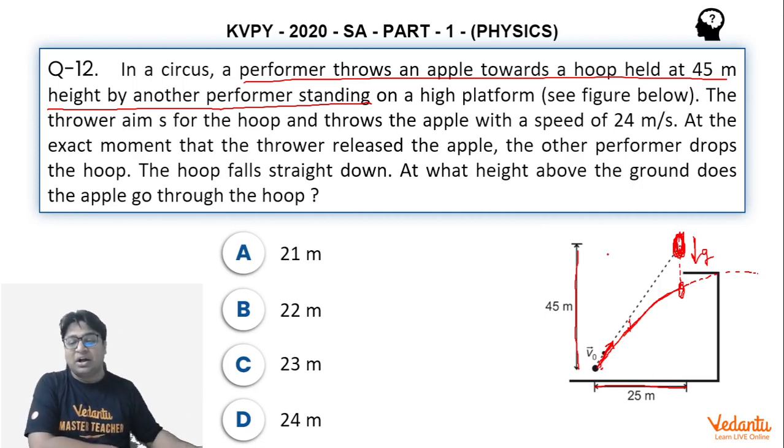Their relative acceleration becomes zero, which means that their relative velocity becomes constant. So in the frame of the hoop, if the ball was thrown with a certain velocity towards itself, then because the relative velocity is constant, the path of the bullet will appear to be a straight line when seen from the hoop.